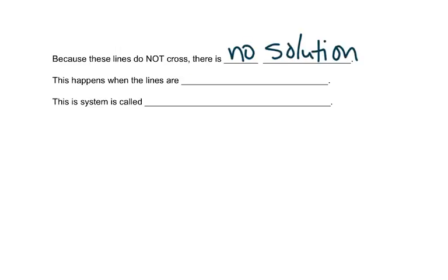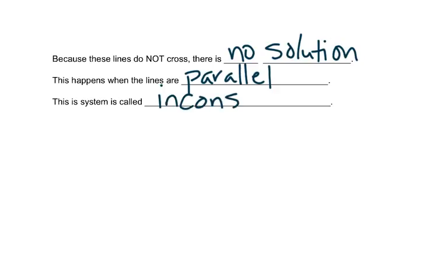This happens when the lines are parallel. Notice that the slope on both equations is 4 — we talked about that in the last chapter — and that tells us the lines are parallel. This system is called inconsistent because there's no solution.